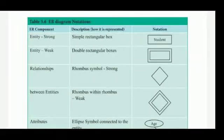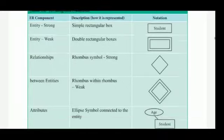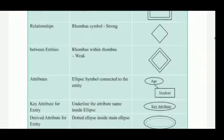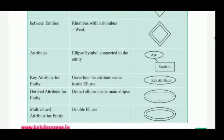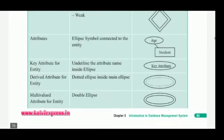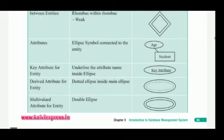The first ER component includes its description and notation. The ER components are: strong entity, weak entity, relationship between entities, attributes, key attributes for entity, derived attributes for entity, and multi-valued attributes for entity.